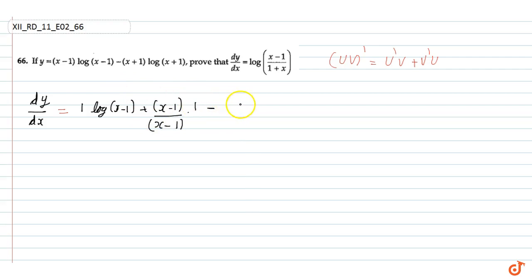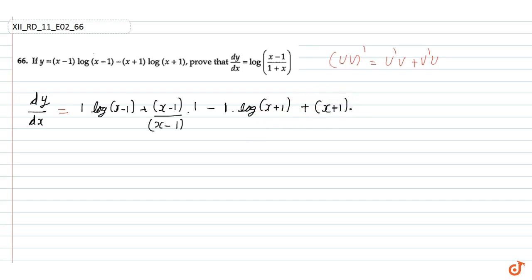अब हम x plus 1 का differentiation करेंगे, और log(x plus 1) को रहने देंगे। तो x plus 1 का differentiation 1 होता है, और log(x plus 1) रहने दिया। Plus है। अब x plus 1 into — log(x plus 1) को differentiate करेंगे, तो 1 upon (x plus 1) आएगा। And x plus 1 को differentiate करेंगे तो 1. दोनों जगह 1 लिखा होगा।